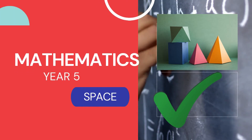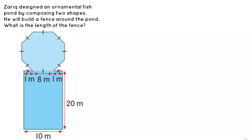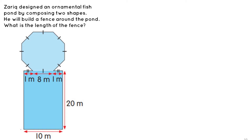Hi children, welcome to class today. Today we will learn to solve problems involving space. Look at Example 1: Zarig designed an ornamental fish pond by composing two shapes. He will build a fence around the pond. What's the length of the fence? First, understand the problem — we have a shape composition of a rectangle and a regular octagon.